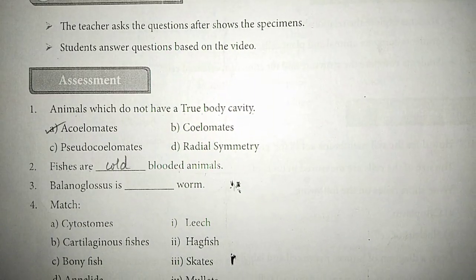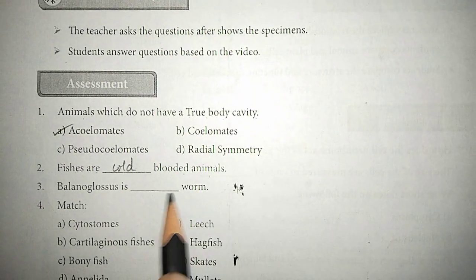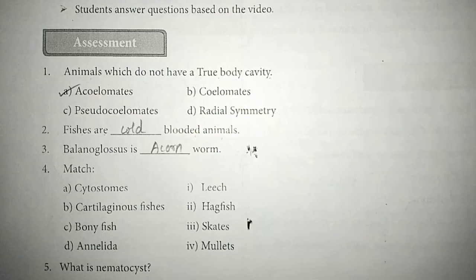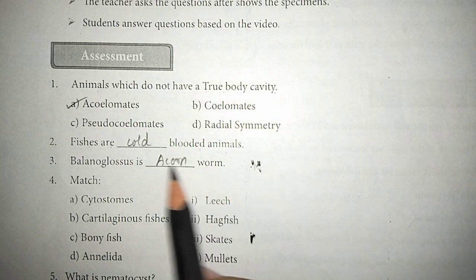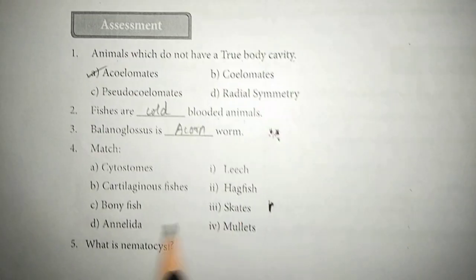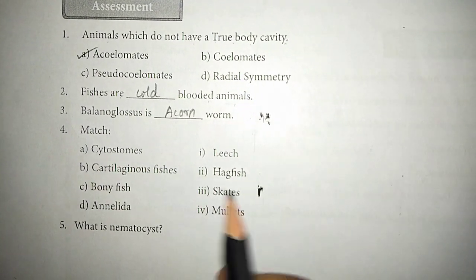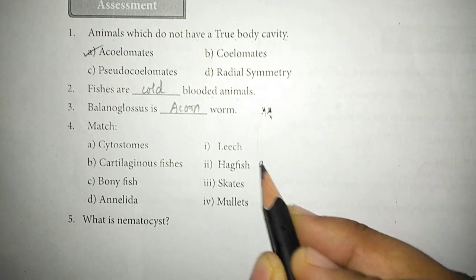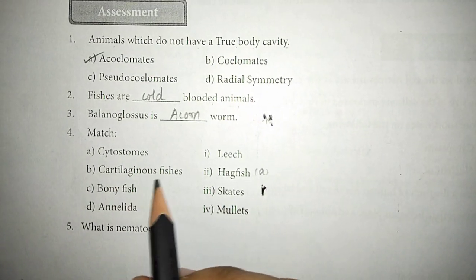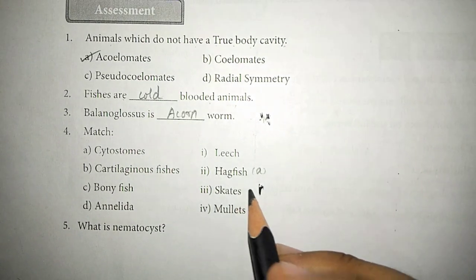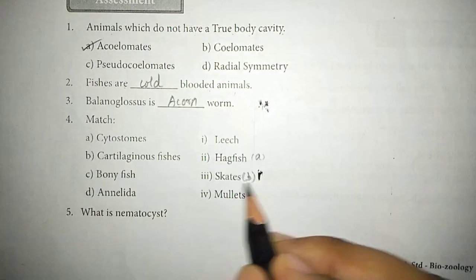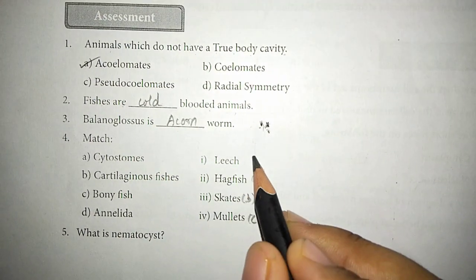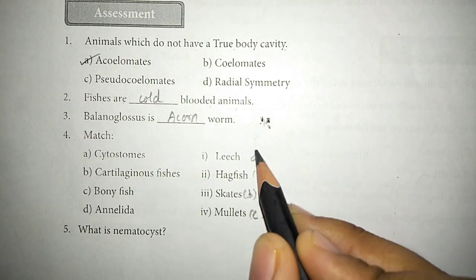Next one: Balanoglossus is an acorn worm. Hagfish. Next one: cartilaginous fishes. Bony fish. Mullets. Annelida. Leech — this is the leech.